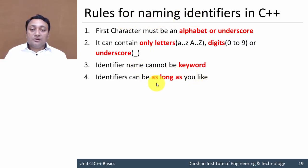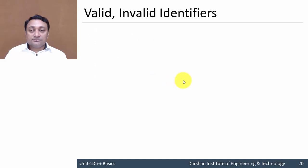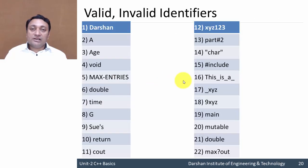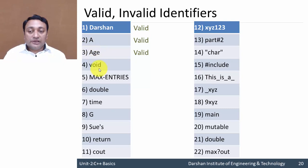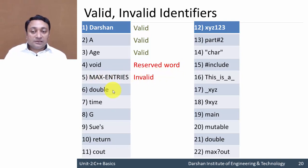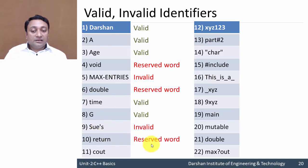Let us check various valid and invalid identifiers. 'Darsan' starts with an alphabet, so it is valid. 'void' is a reserved keyword, so it is invalid. 'makes_entries' with a special symbol is invalid. 'double' is a reserved keyword — invalid. 'G' is valid. An identifier with a special symbol is invalid. 'return' is a reserved word — invalid. 'Cout' is a standard predefined identifier, so you cannot use it as a variable name — invalid.